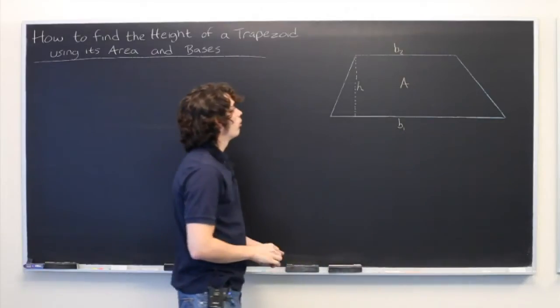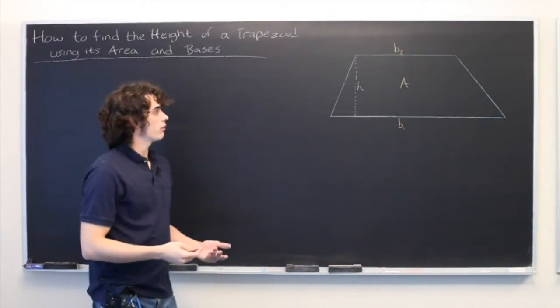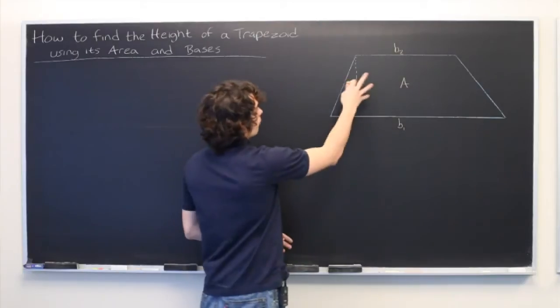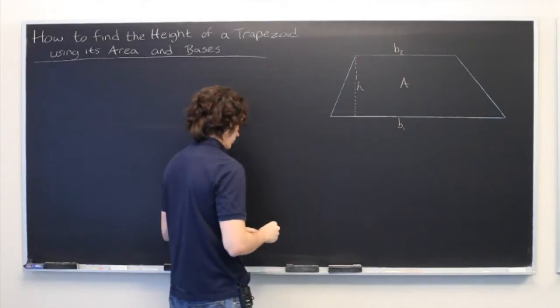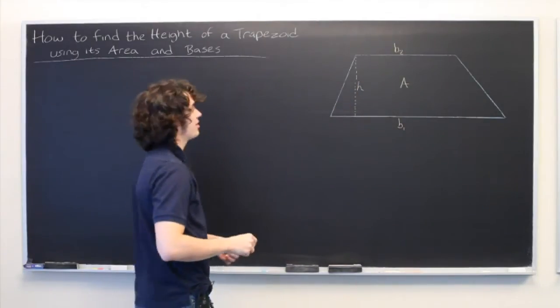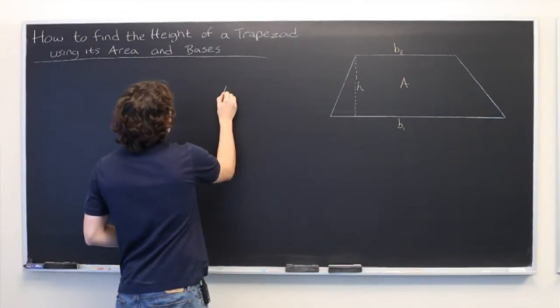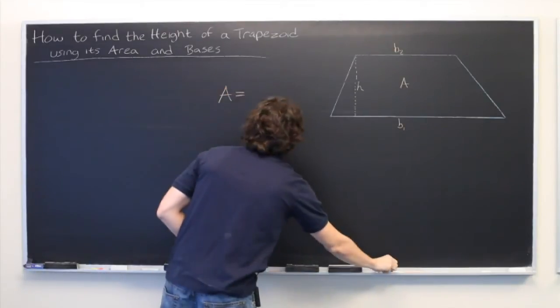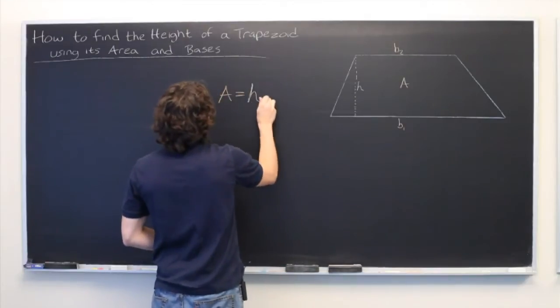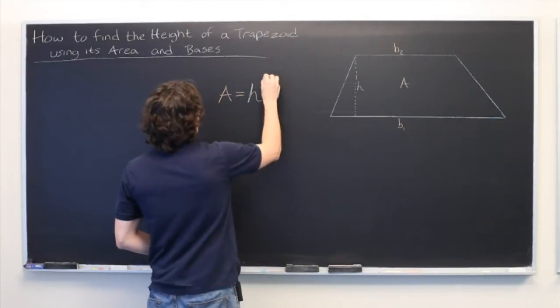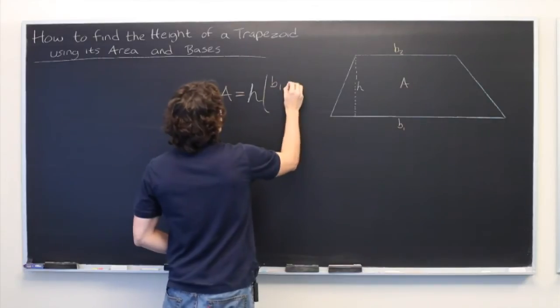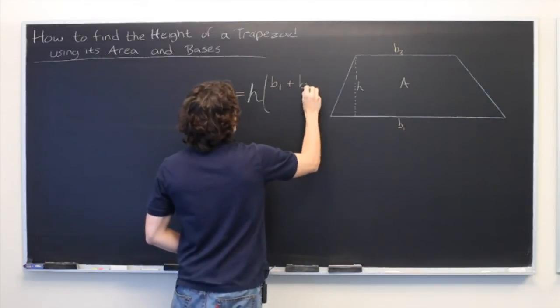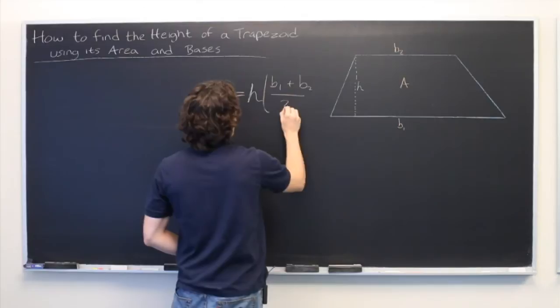So what we want is some sort of equation or formula that relates all four of these quantities. And it just so happens that there is such a formula, typically written A equals H times B1 plus B2 over 2.